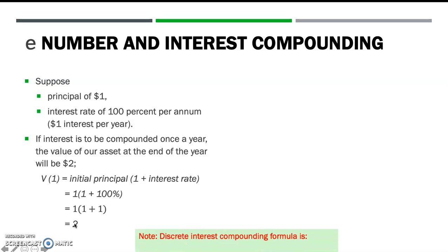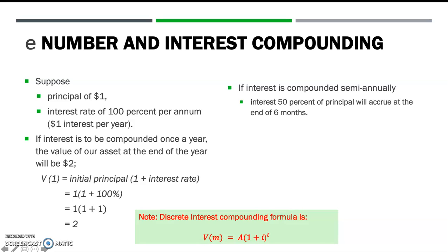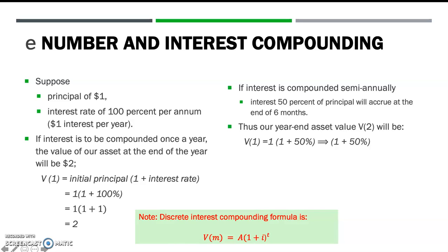This is obtained from the discrete interest compounding formula. If interest is compounded semi-annually, an interest accounting to 50% of the principal will accrue at the end of 6 months. At the first stage, at the end of the first 6 months, V1 equals 1 plus 50%, since we assume the principal is equal to 1.